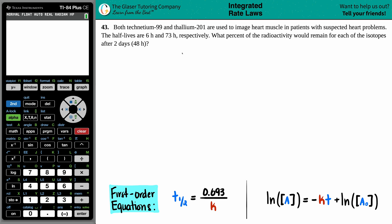Number 43. Both technetium-99 and thallium-201 are used to image heart muscle in patients with suspected heart problems. The half-lives are 6 hours and 73 hours respectively. What percent of the radioactivity would remain for each of these isotopes after two days, which is 48 hours?